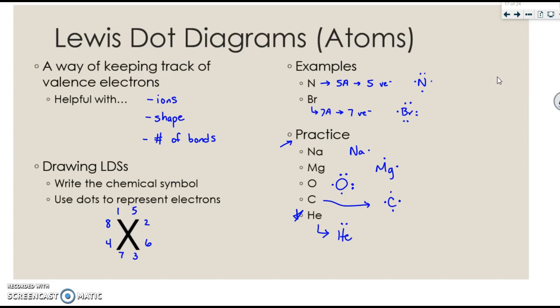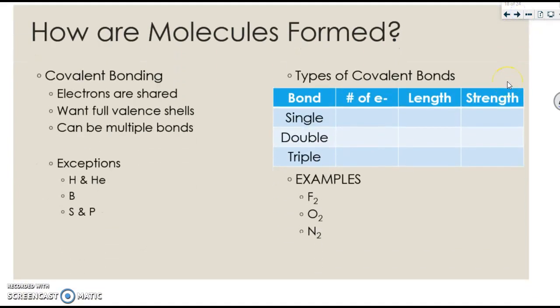Okay, hopefully that wasn't too bad. Now instead of atoms, we're going to talk about molecules. For covalent bonds, electrons are shared. In general, most elements want full valence shells, and covalent molecules can form multiple bonds, so some double and triple bonds as well.